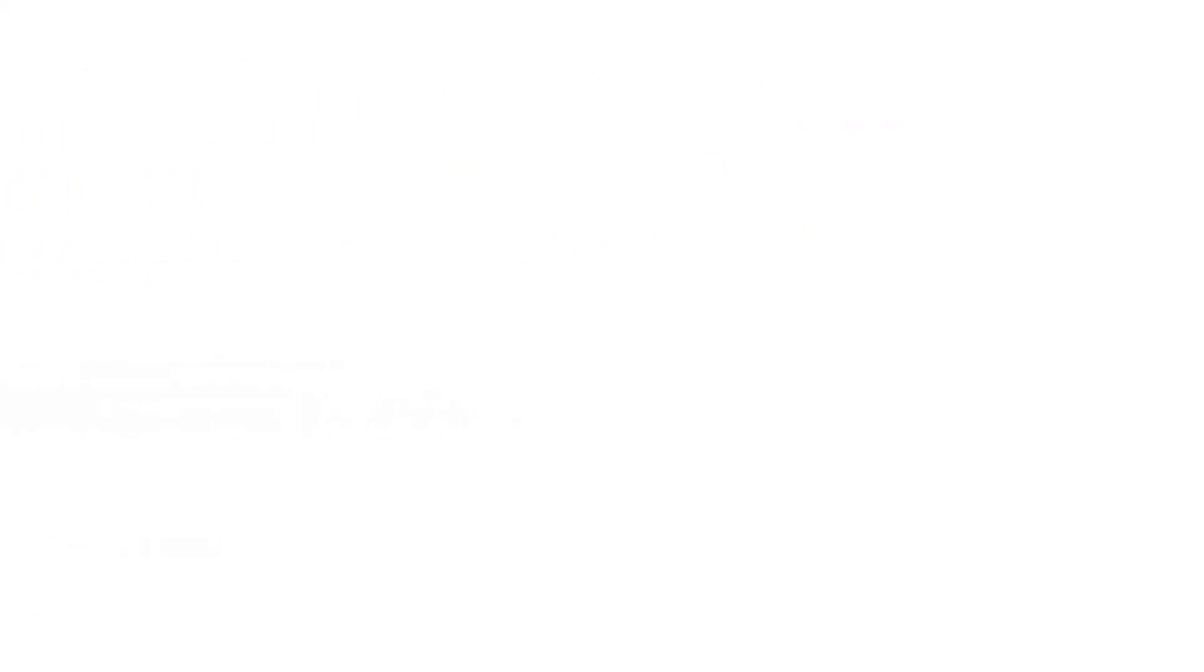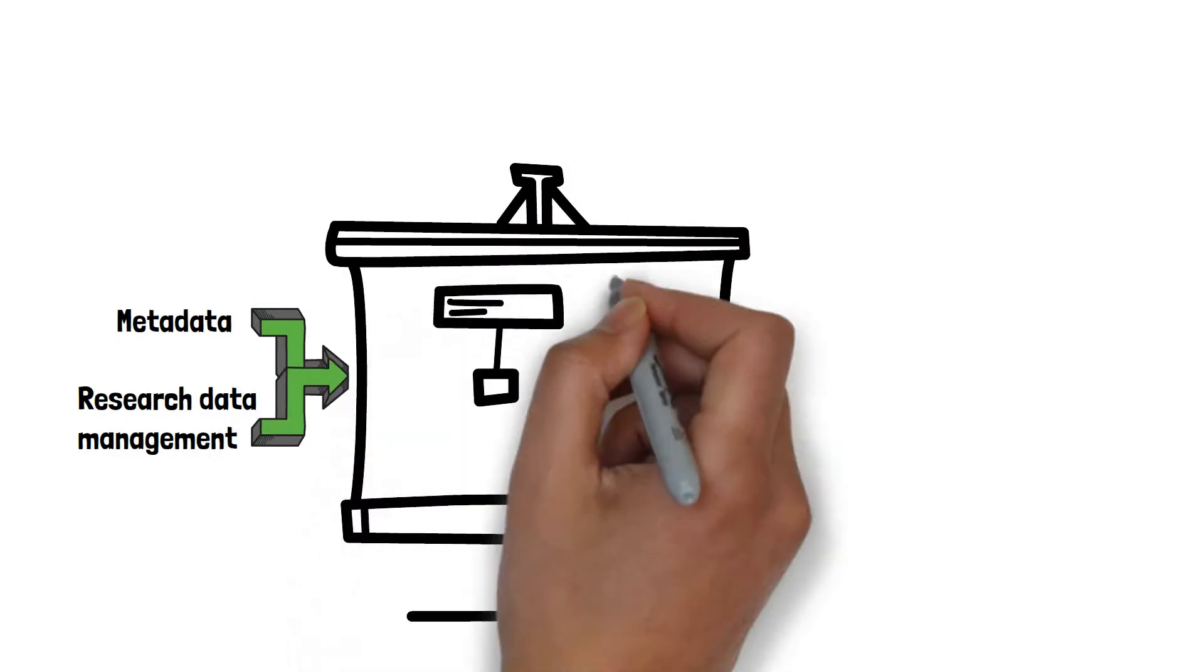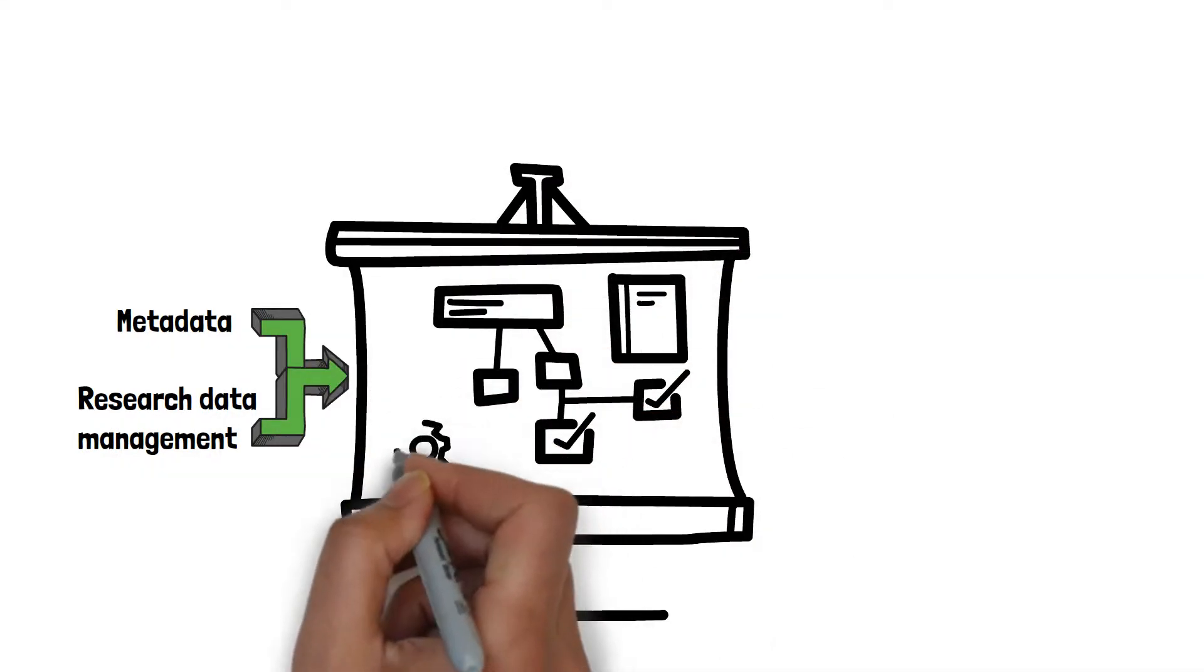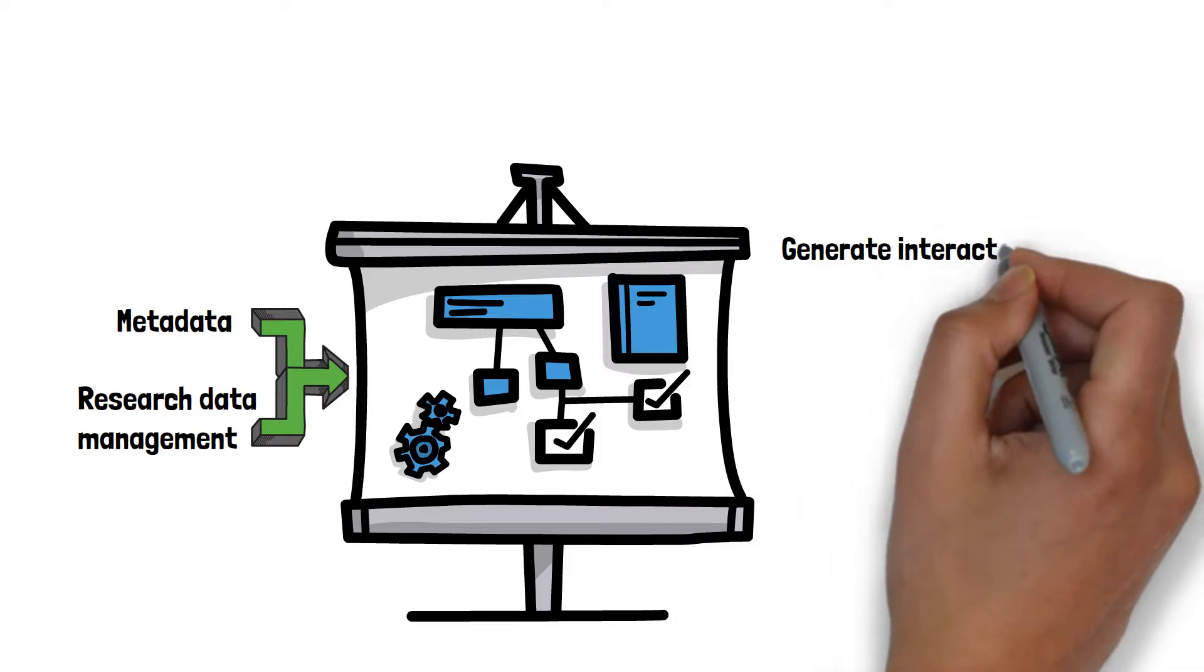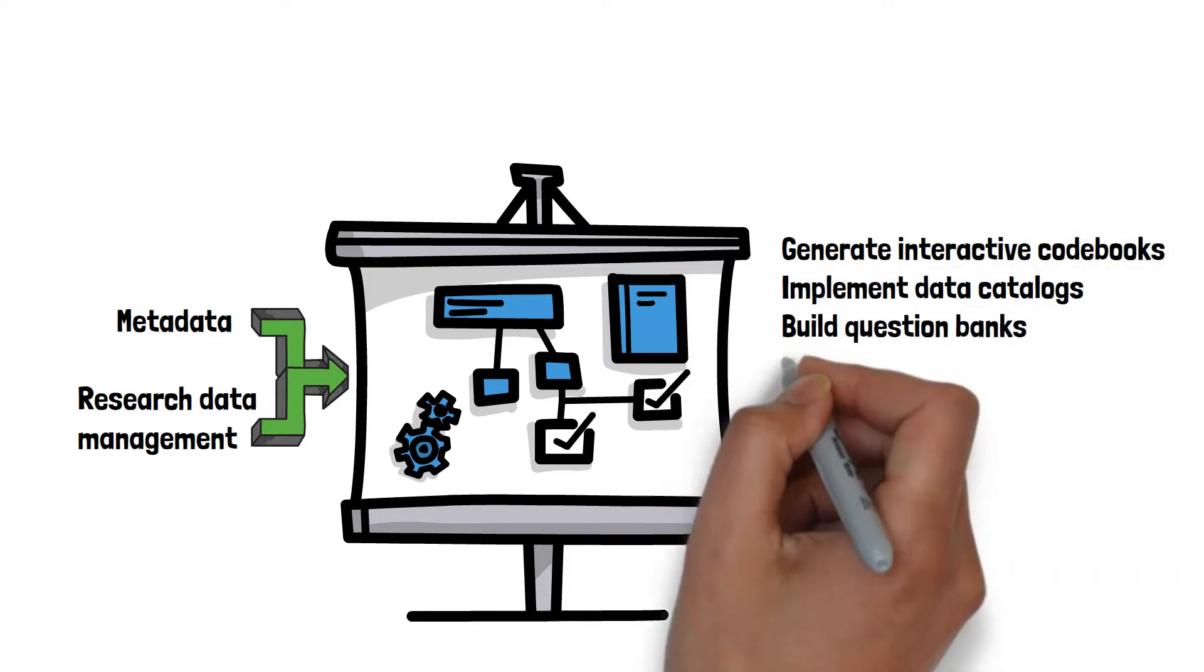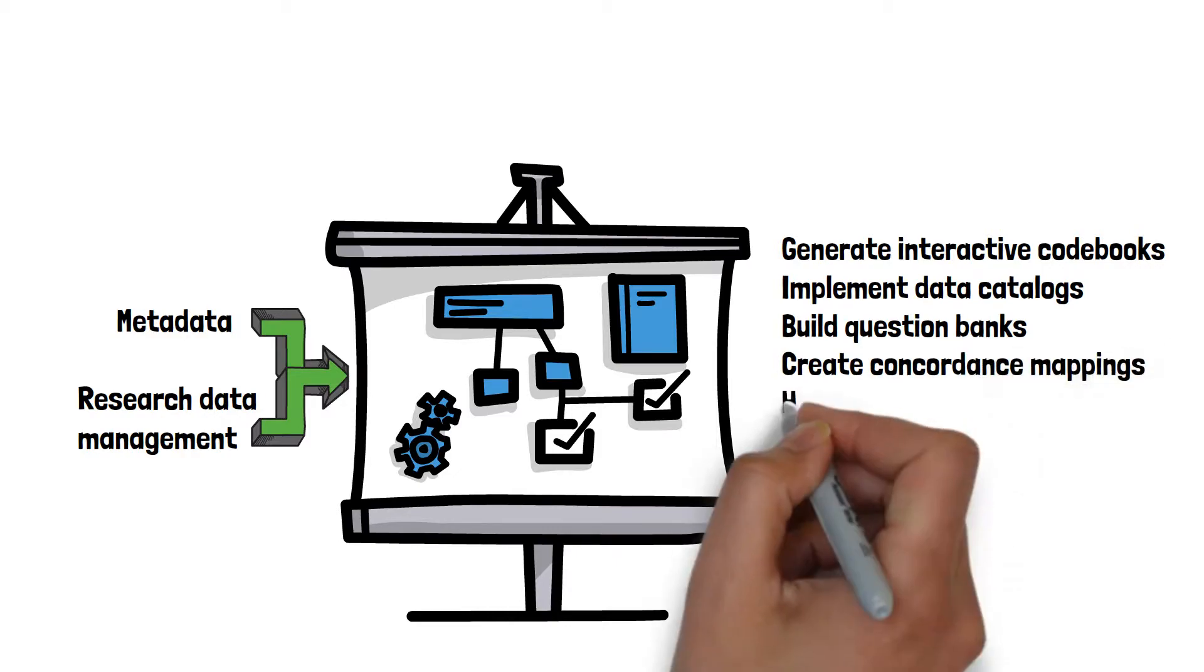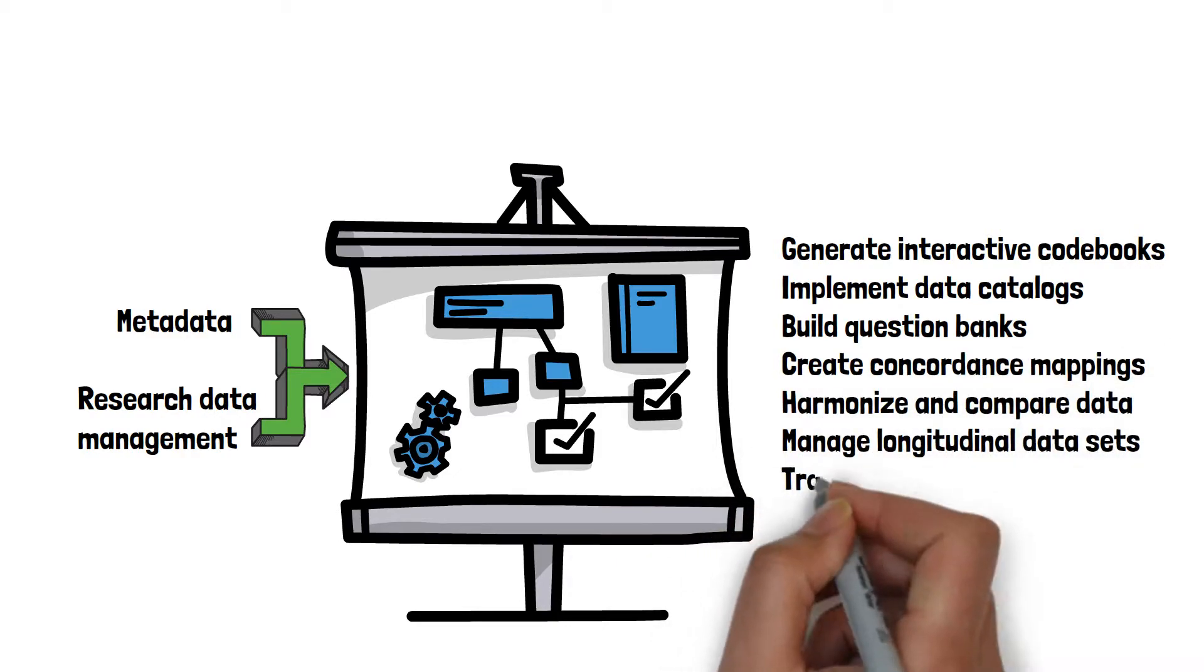DDI supports the entire research lifecycle by integrating metadata and research data management into a data lifecycle workflow. Its comprehensive description of the data streamlines analysis and makes it easy to generate interactive codebooks, implement data catalogues, build question banks, create concordance mappings, harmonize and compare data, manage longitudinal datasets, and track changes.